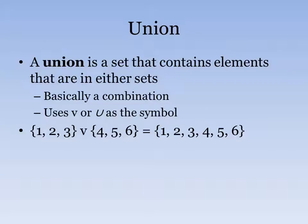A union is a set that contains elements that are in either sets. So it's basically a combination of the sets. It uses a symbol that looks like a U. And for example, if you have two sets, one set which is 1, 2, 3, and the other set which is 4, 5, 6, the union of the two sets are 1, 2, 3, 4, 5, 6.